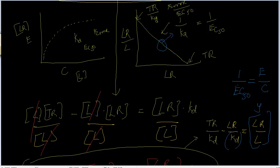Since the equation is Y equals MX plus B, M is 1 over EC50, and Y is E over C. X is the ligand-receptor complex, which is nothing but the effect, E. So effect is the X axis.